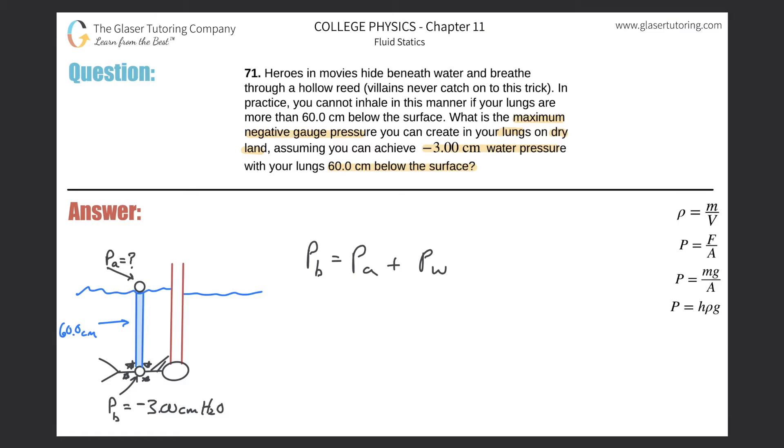So what did they tell us? Well, they told us down here that the pressure once they're beneath the surface - assuming you can achieve negative three centimeters of water pressure when you're below the surface - so this pressure value below the surface is negative three centimeters. I'm just going to use three centimeters of H2O. That's the unit of pressure.